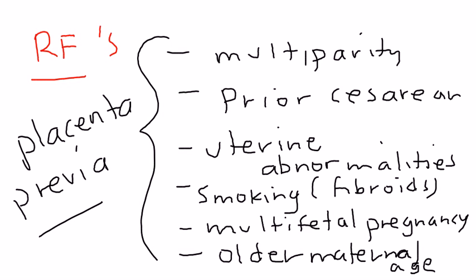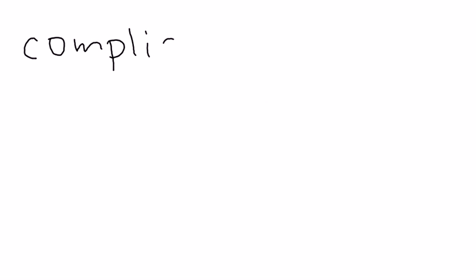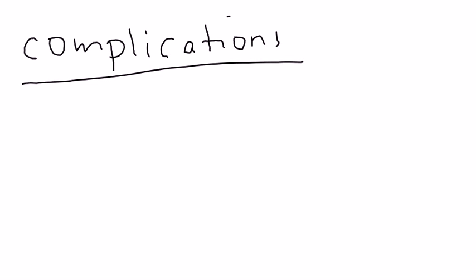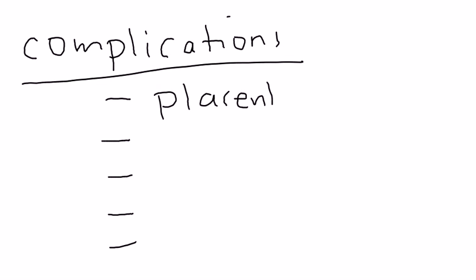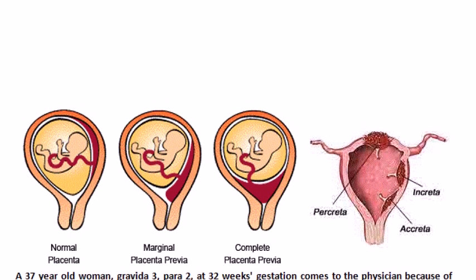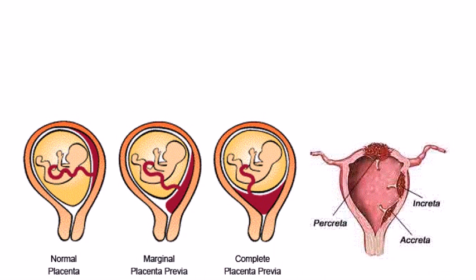So why is placenta previa even an issue? Why can't you just continue the pregnancy normally? Because placenta previa can cause some significant complications. The first complication is something called placenta accreta. To illustrate that, we go back to our diagram — this diagram on this side. This is placenta accreta.